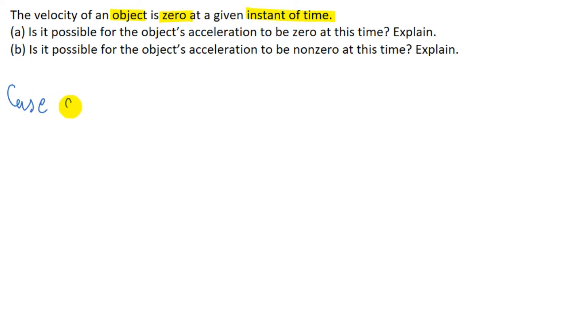Is it possible for an object's acceleration to be zero at this time? Now this is possible. Yes it is possible. Let me take an example. Suppose an object is at rest. So the velocity is zero and the acceleration is also zero. So yes it is possible.